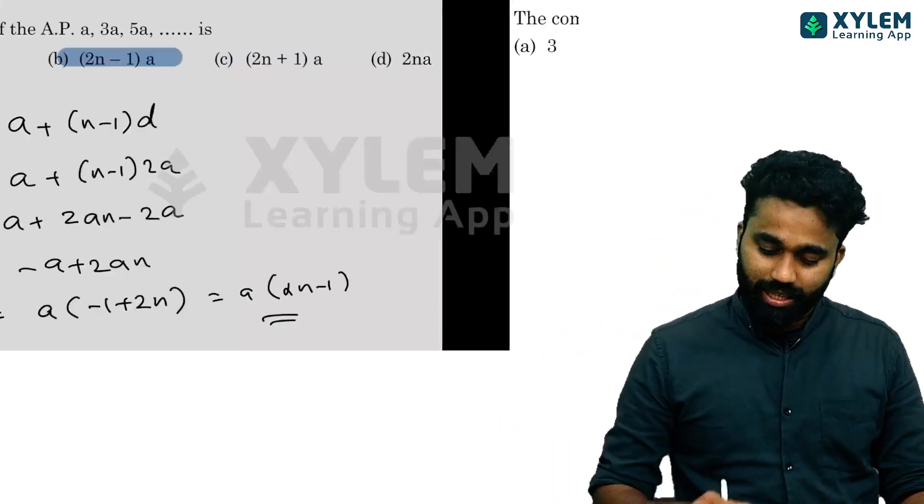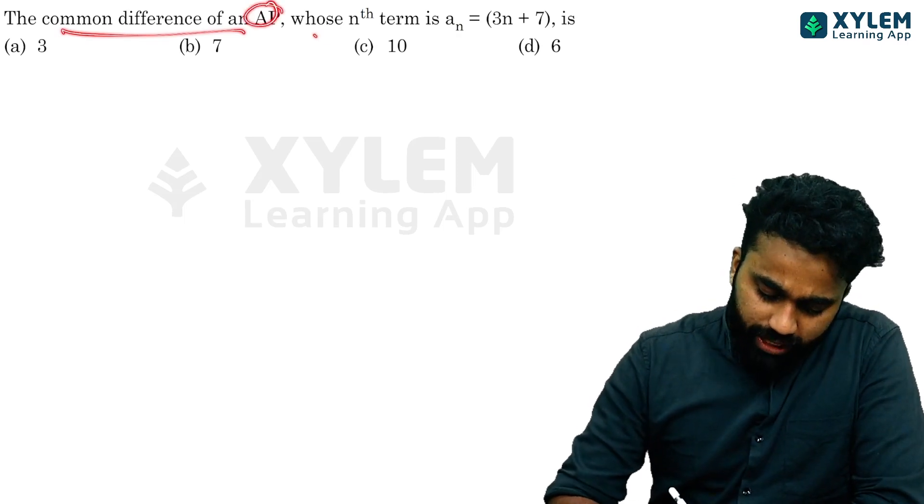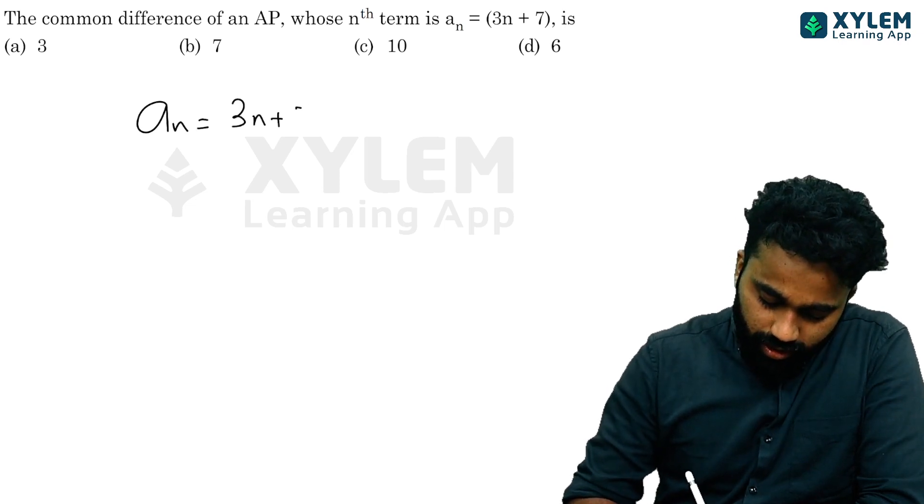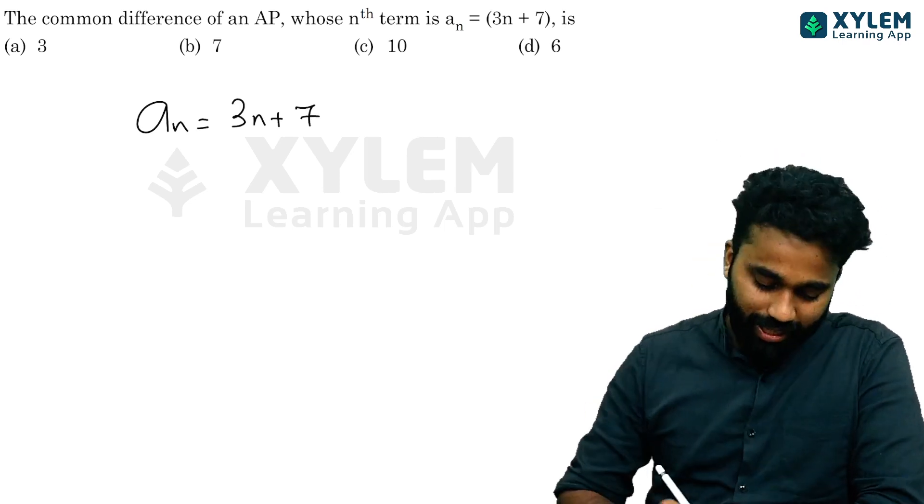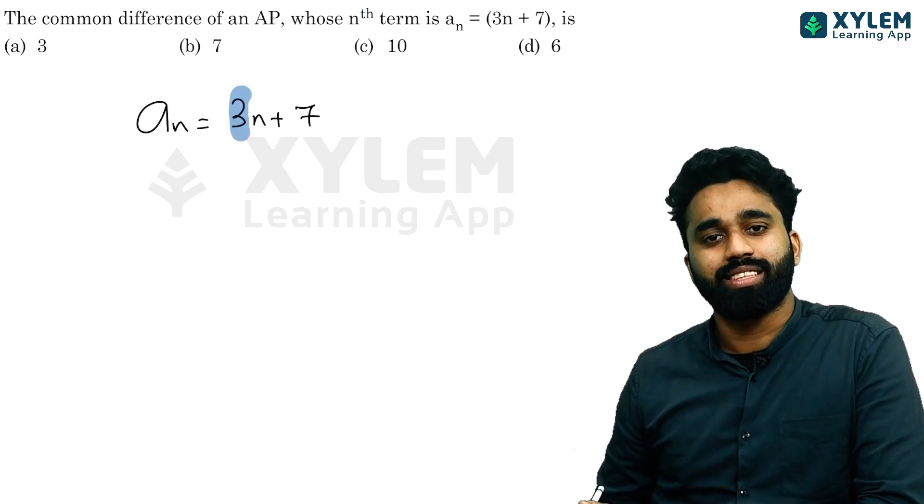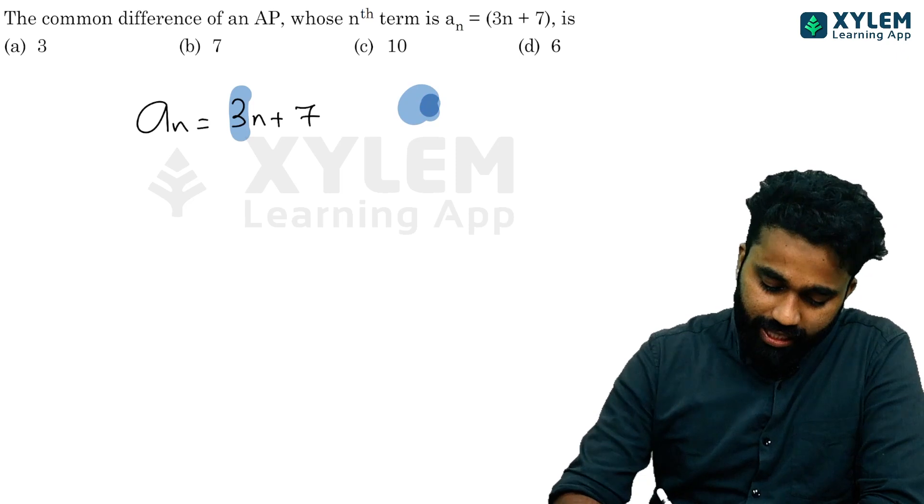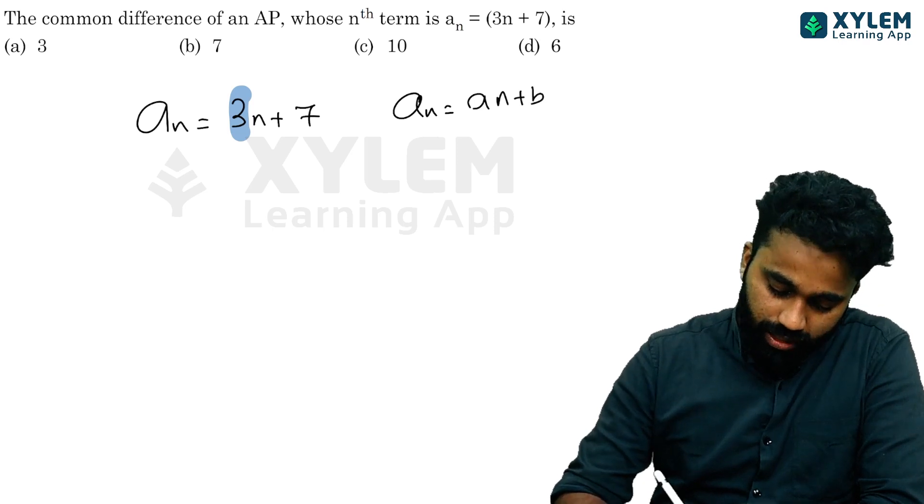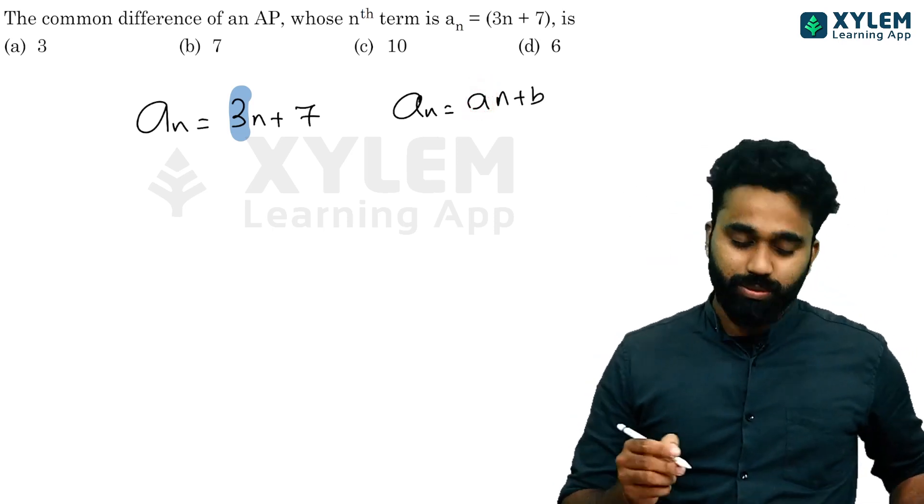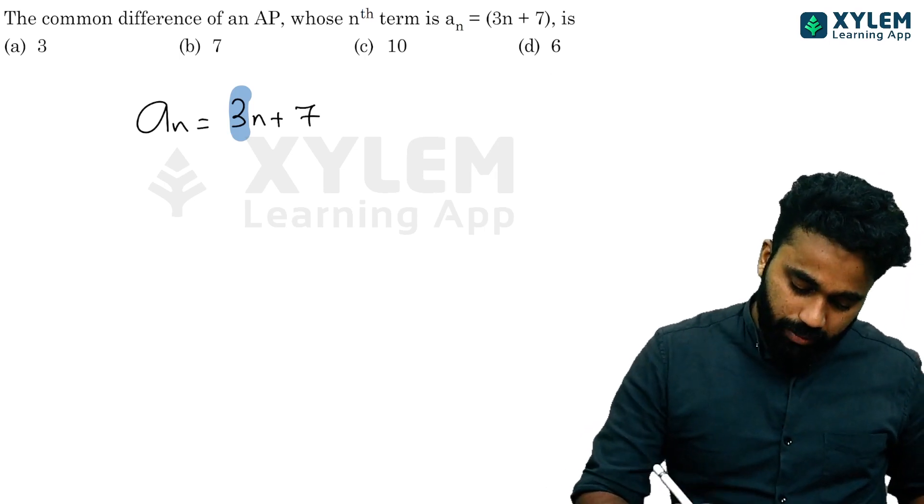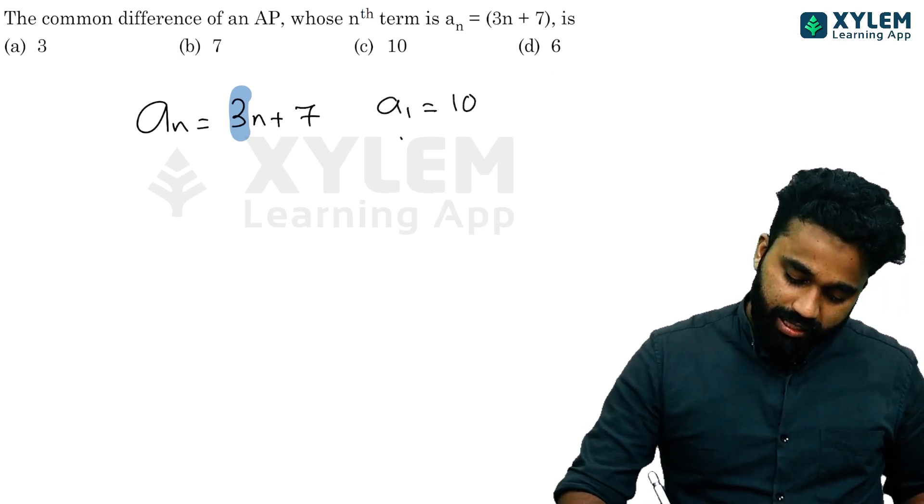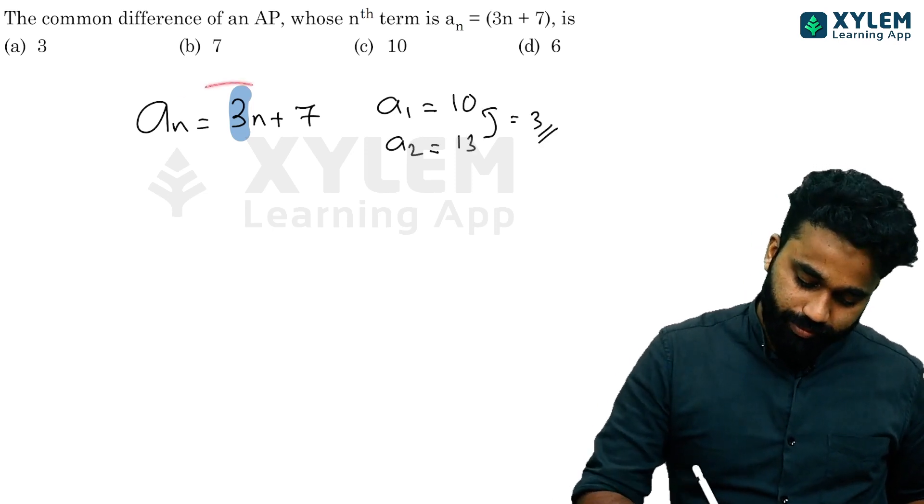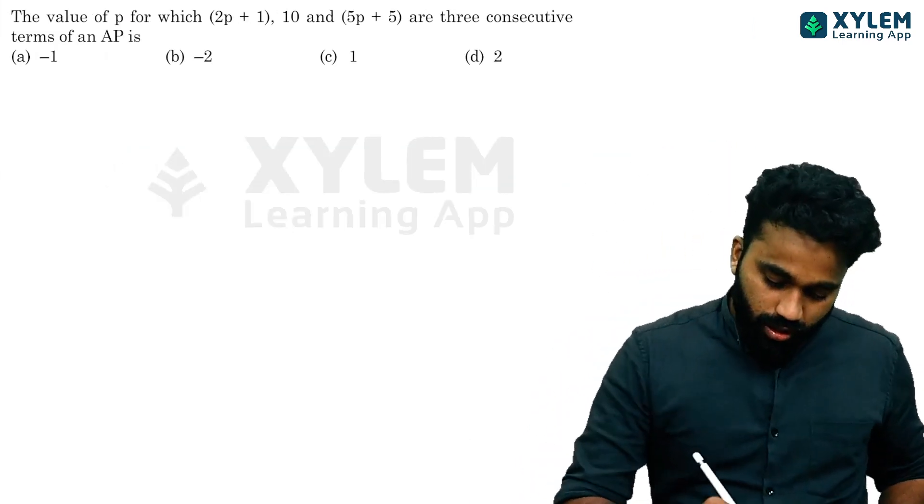The common difference when nth term is aₙ equals 3n plus 1. Simple method: when aₙ equals an plus b form, the common difference is a. First term is 3 times 1 plus 1 equals 4. Second term is 6 plus 1 equals 7. So 7 minus 4 equals 3, meaning the common difference is 3.